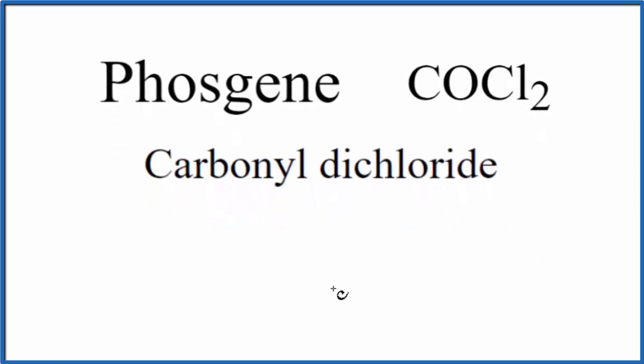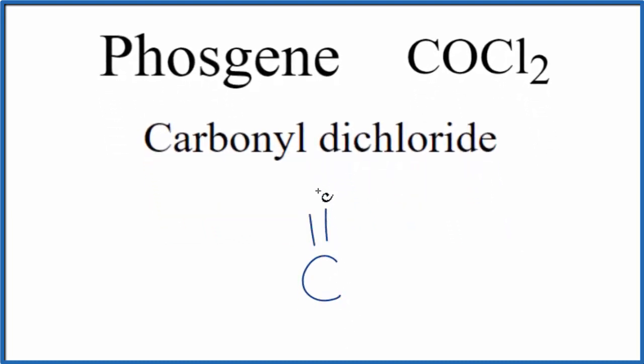So carbonyl, that's when we have a carbon and then it's double bonded to an oxygen. Dichloride means there'll be two chlorine atoms. And really, the only place we can put them is right off to the side here.